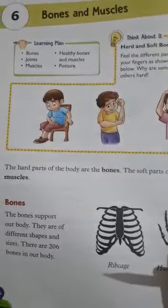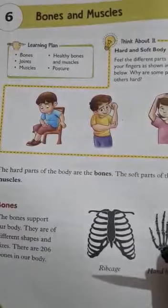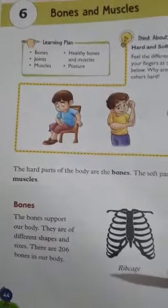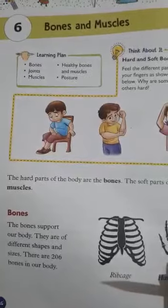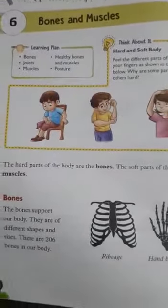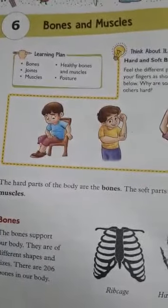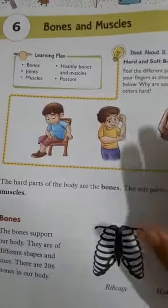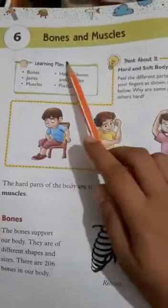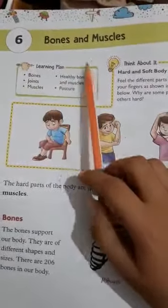Good morning. Plus two subject: Science. Date: 30th June. Page number 44. Chapter number 6: Bones and Muscles. Today we start the new chapter, Bones and Muscles. Let's see the learning plan — which parts we are learning in this chapter.